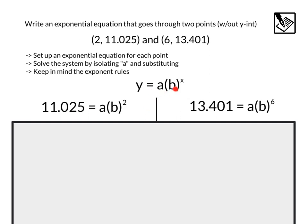So taking this general equation, we'll substitute in our x value and our y value to form one equation. And then with our other point, we'll substitute again our x value in, 6, and our y value, 13.401, to get two separate equations.